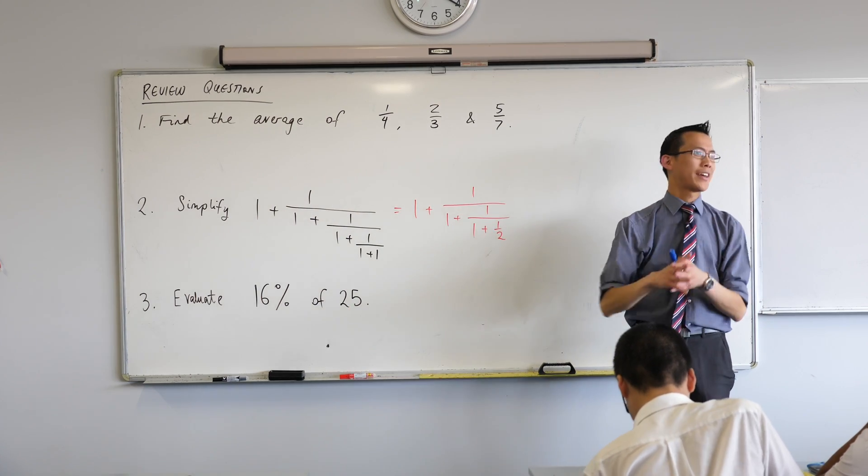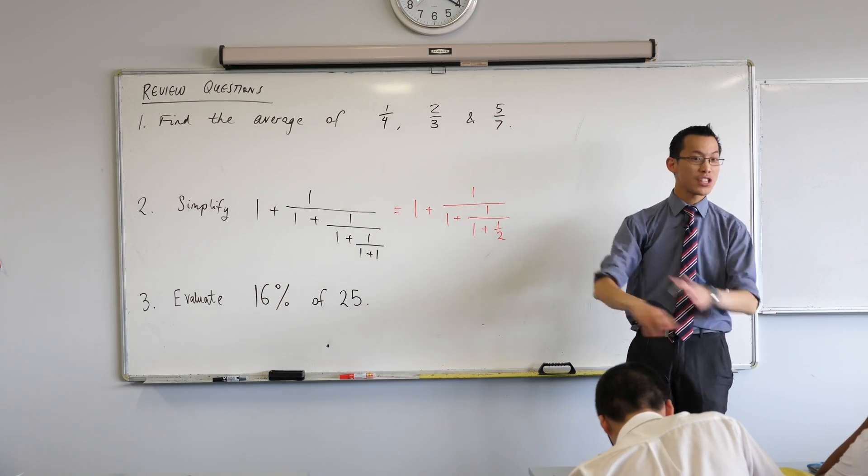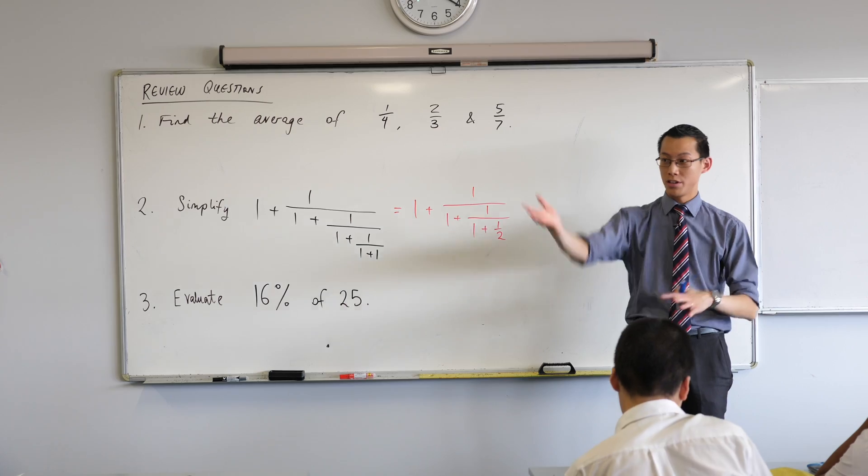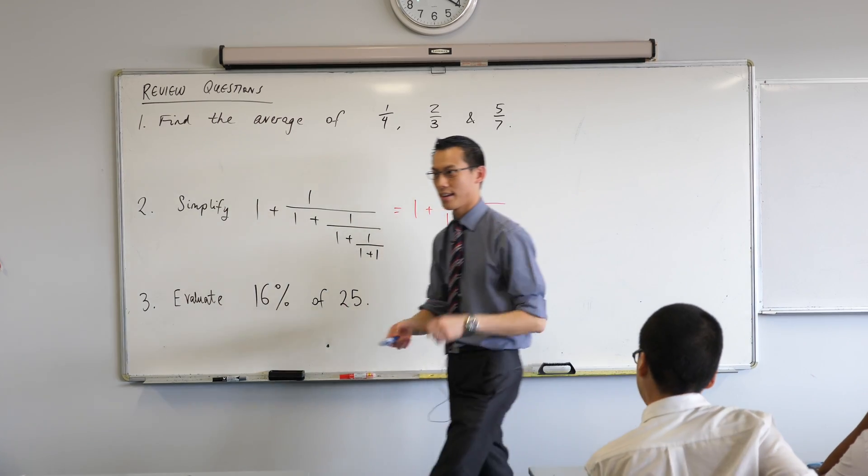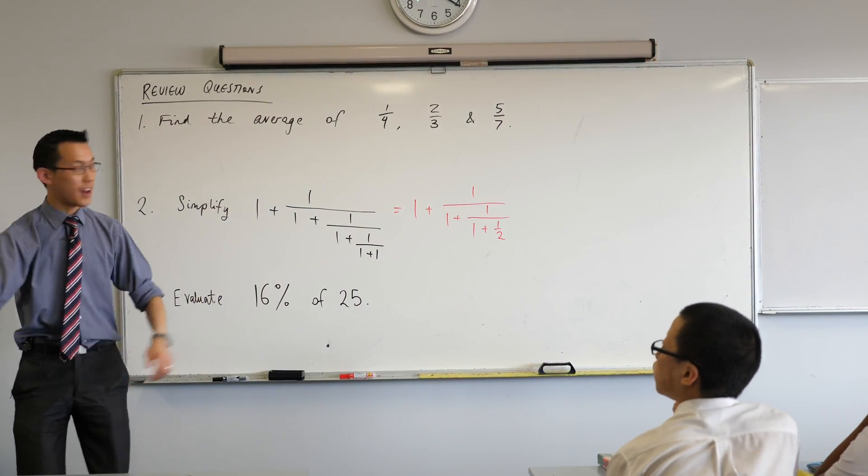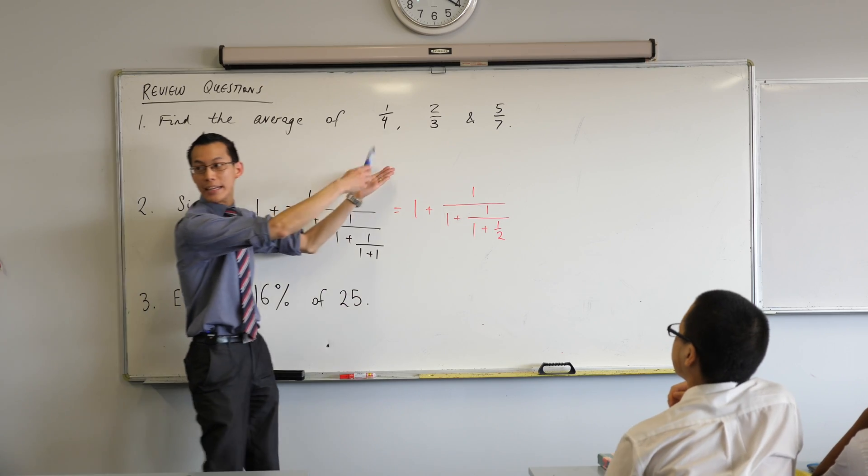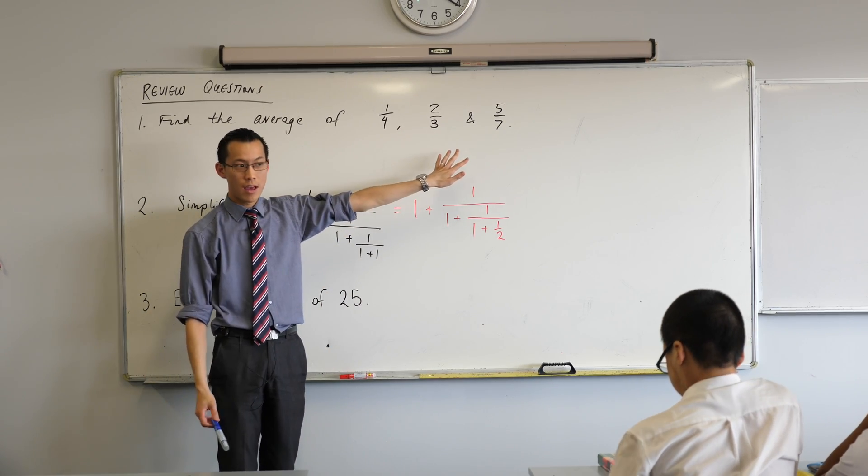Can someone remind me, how do I work out an average? Don't worry about these particular numbers, just averages in general. Anuj, what do you reckon? Add all the numbers together and divide by however many there are. Add all the numbers together and then divide by however many there are, which in this case is? Three. Three, okay.